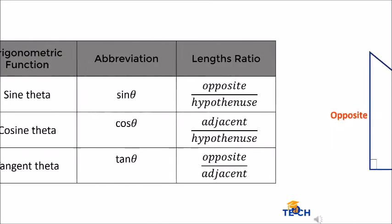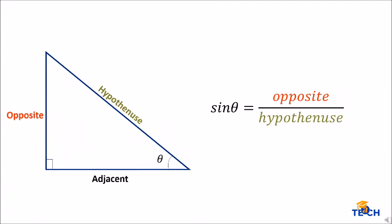First, sine theta. For sine theta, we have opposite over hypotenuse. The opposite here means the opposite side of the angle of interest, which is the leg, and the hypotenuse is the side opposite the right angle. This is the ratio for the sine theta trigonometric function.